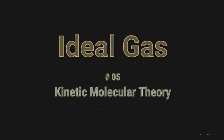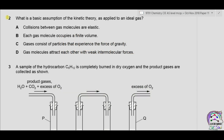Question 2: What is the basic assumption of kinetic theory as applied to an ideal gas? Option A: collisions between molecules are elastic. This is true for ideal gas as there is no energy gained or lost in collisions, so the collisions are perfectly elastic. Option B: each gas molecule occupies a finite volume — according to ideal gas theory, the volume of one gas molecule is almost negligible, not finite, so B is incorrect. Option C: gases consist of particles that experience the force of gravity — in ideal gas, there is no force of attraction, repulsion, or gravitational force, so this is incorrect. Option D: gas molecules attract each other — there must be forces of attraction, which is also incorrect for ideal gas. The only correct option is A.